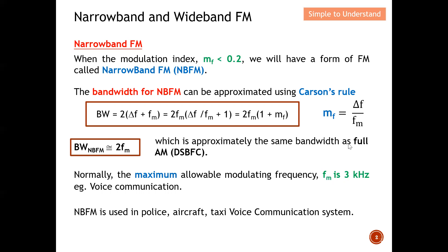This bandwidth of 2fm is approximately the same as double sideband full carrier AM, where the bandwidth also equals 2fm. For narrow band FM, the maximum allowed modulating frequency is typically 3 kHz. Because of this low frequency limit, narrow band FM is typically used only for voice communication, such as in police, aircraft, and taxi communication systems.